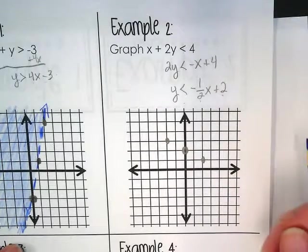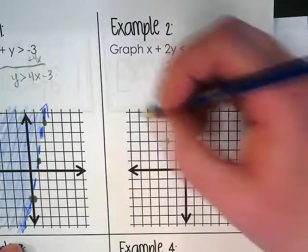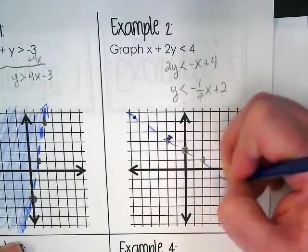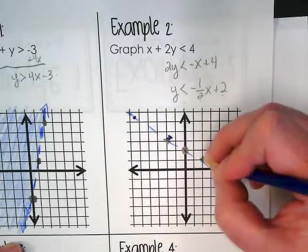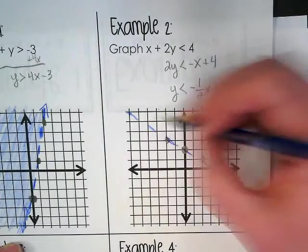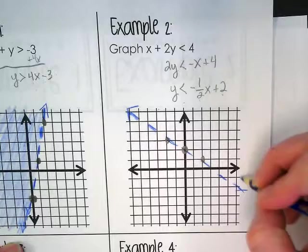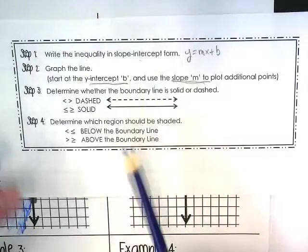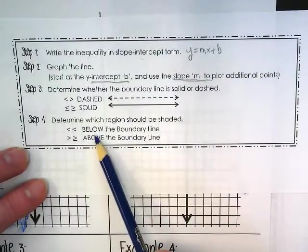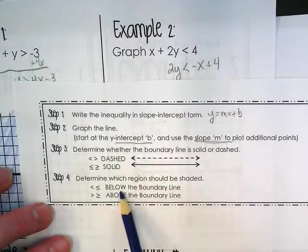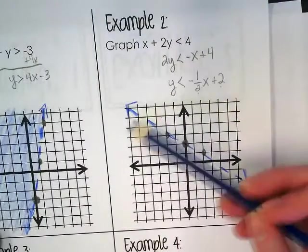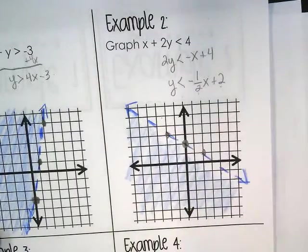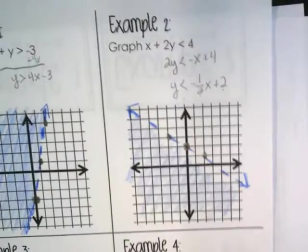Kenny, I'm curious why that computer is open. Because it's cool. And then we're going to make a dashed line going through. Because it doesn't have an or equal to. And then we have to decide what part of this we're shading. And let's look again at our notes. Which should be shaded? This is a less than. And so it's going to go below the boundary line. So we're going to shade everything under here.